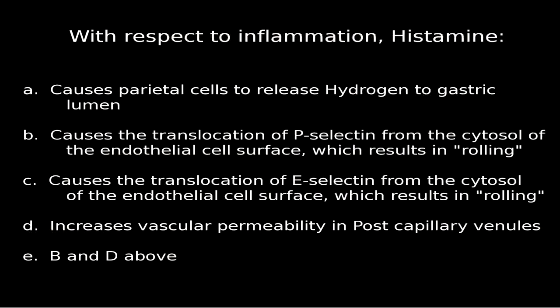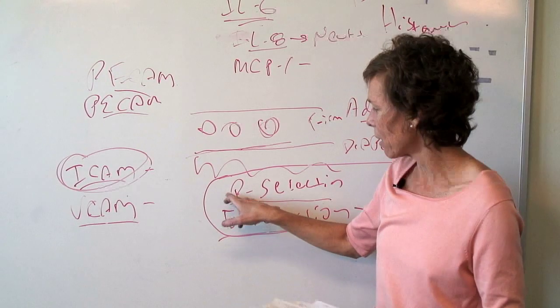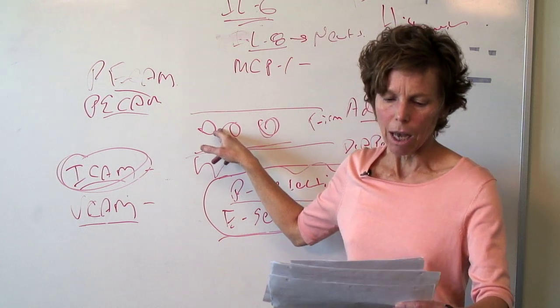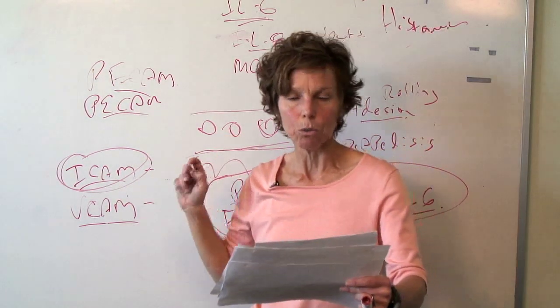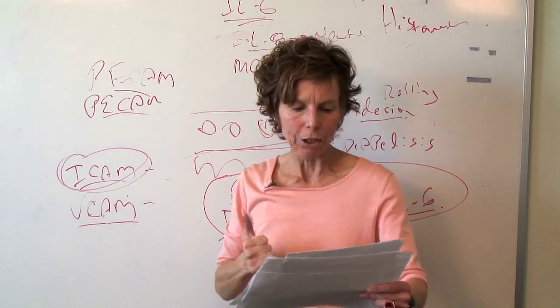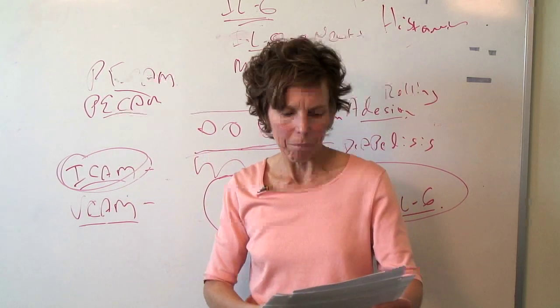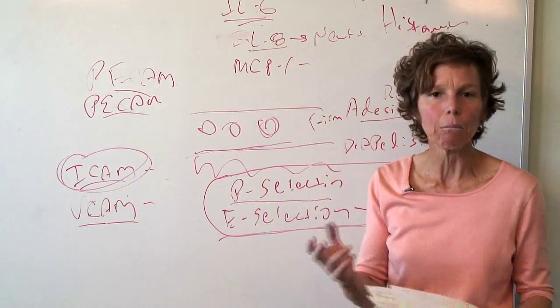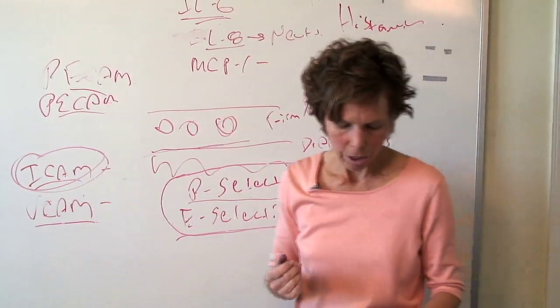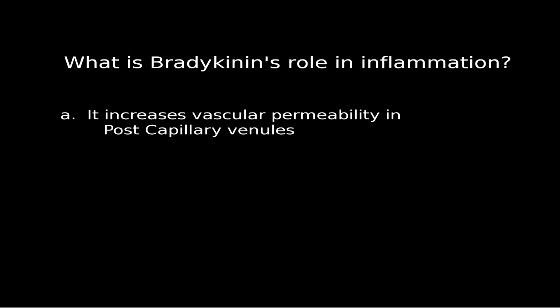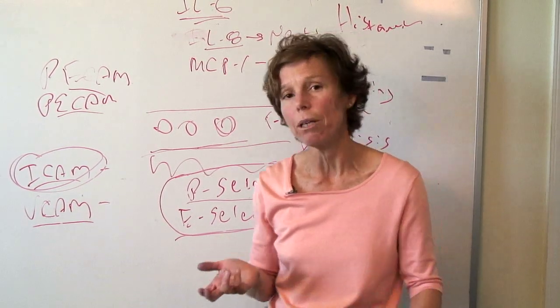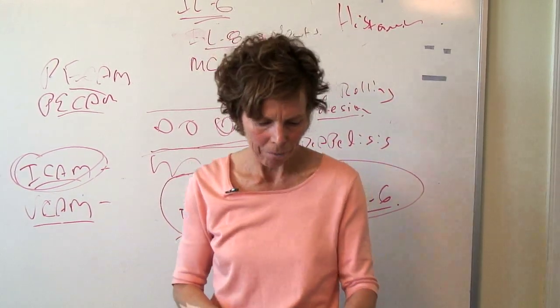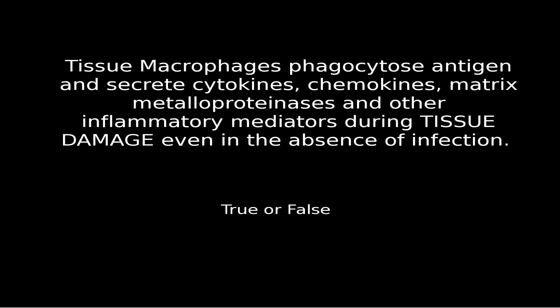Number five: with respect to inflammation, what does histamine do? The answer is B and D. It causes the translocation of P-selectin from the cytosol to the endothelial cell surface, which results in rolling. And it increases vascular permeability in postcapillary venules — you've got to be permeable in order to get those cells in there. Number six: what is bradykinin's role in inflammation? The answer is A — it increases vascular permeability in postcapillary venules. We also know it's a pain mediator. Number seven is a true/false: tissue macrophages phagocytose antigen and secrete cytokines, chemokines, matrix metalloproteases, and other inflammatory mediators during tissue damage, even in the absence of infection — that's true.